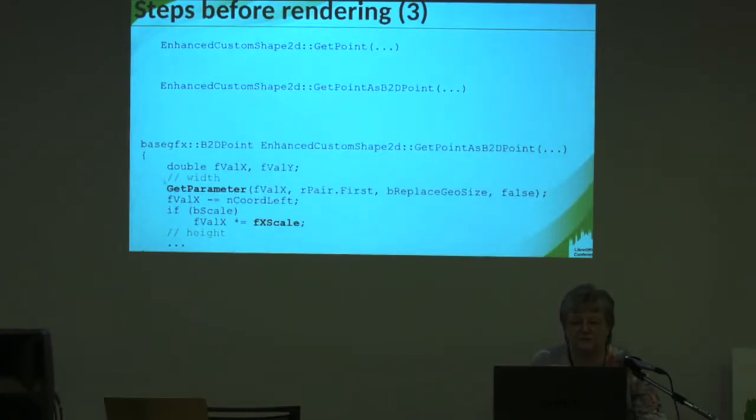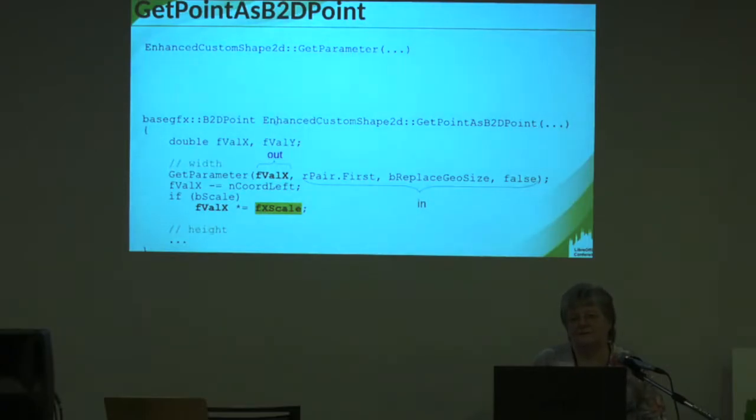Next we look at what does get point do. Get point itself is only a converter from double to integer. The real work is done in get point A. It distinguishes horizontal and vertical. In my presentation I will look only at horizontal. The vertical case is nearly the same. And here you see a part get parameter and a scale. Get parameter, at first glance, converts the description in the path, which may have references to adjustment values and equations, into results, these references to a real number, and returns this number in the parameter value X. We will later have a deeper look on that method. And this value is then multiplied with a scale.